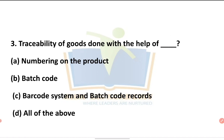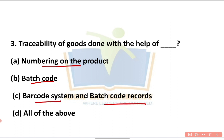Next question: traceability of goods is done with the help of what? Options are: numbering on the product, batch code, barcode system and batch code records, or all of the above. Product numbering, batch code, barcode system, and batch records — all are used for traceability. So the option for the question is D, all of the above.